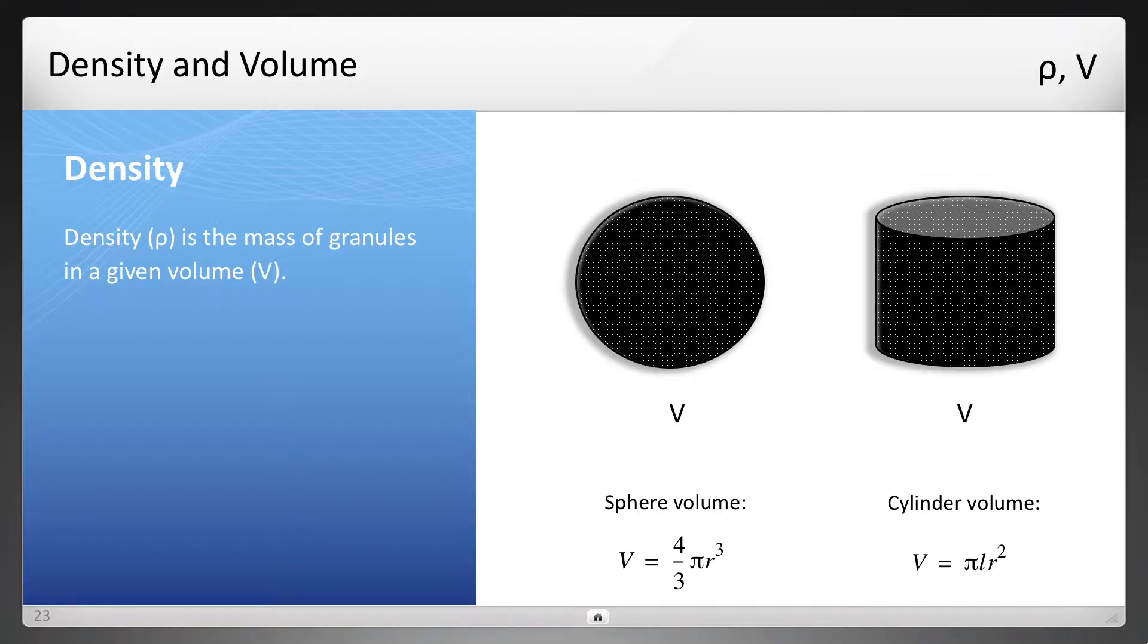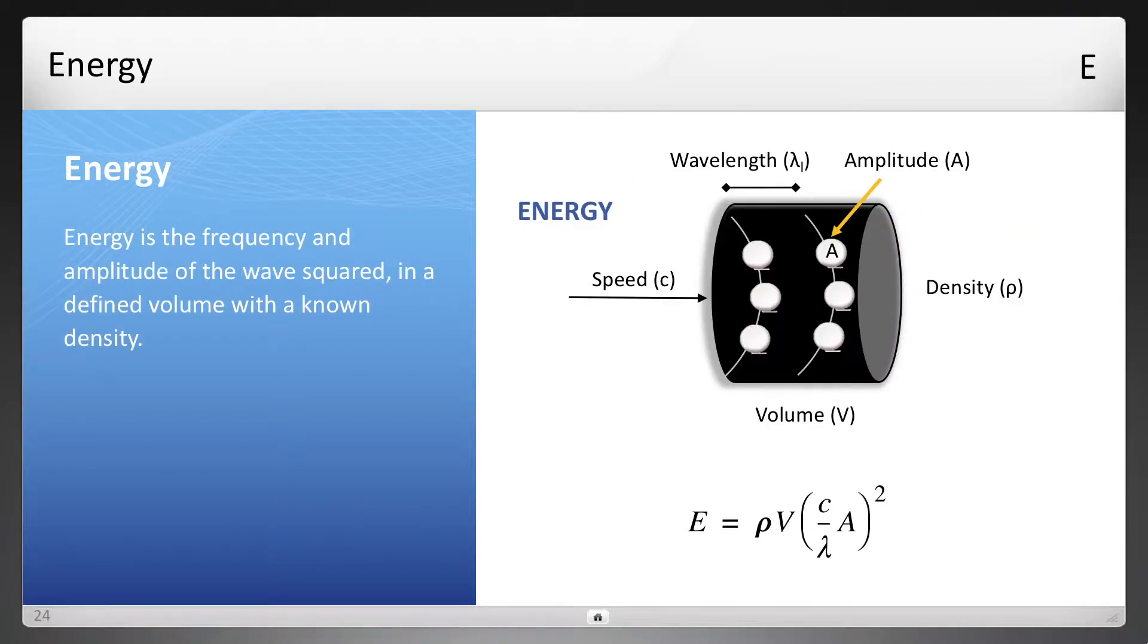And the two most important volumes that are calculated in EWT are spheres and cylinders, and you see the equations there. So that covers density and volume.